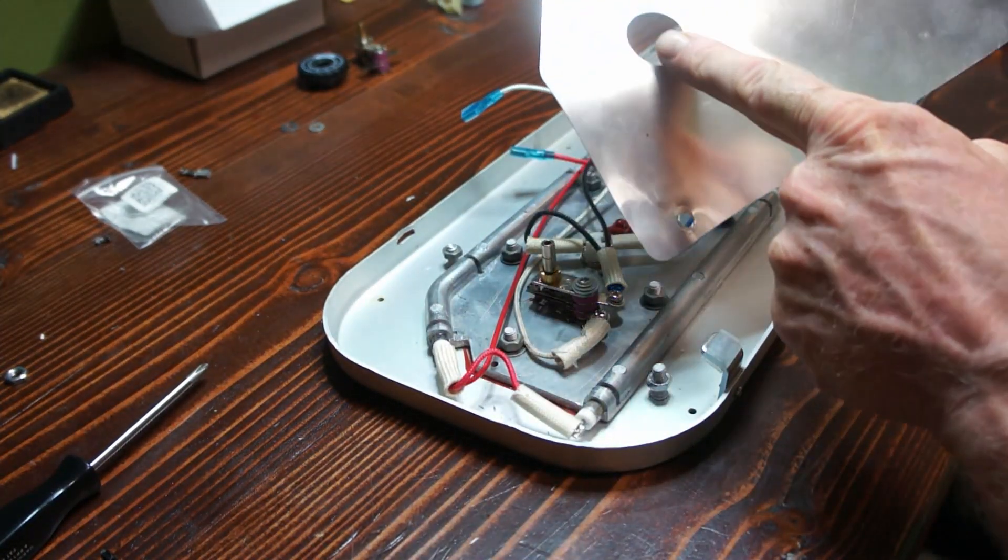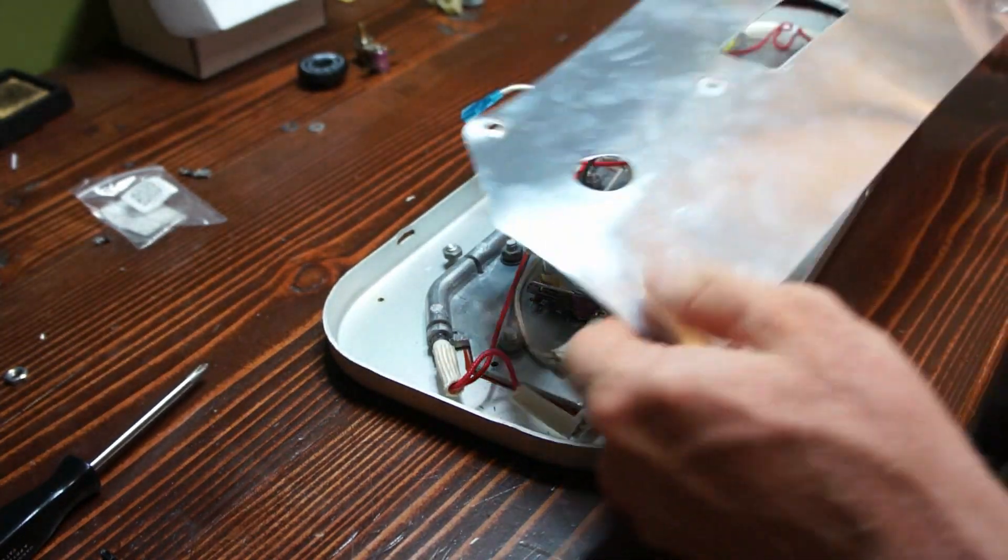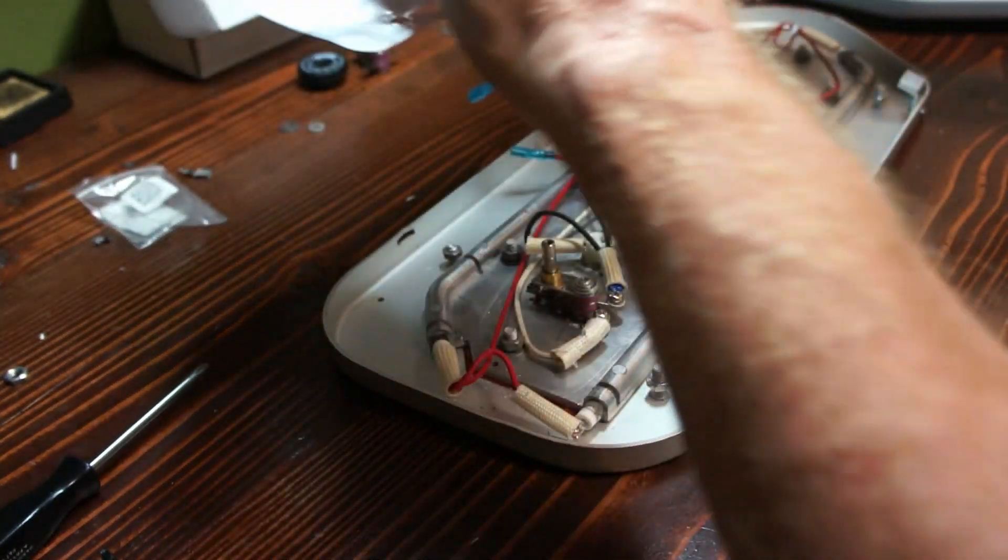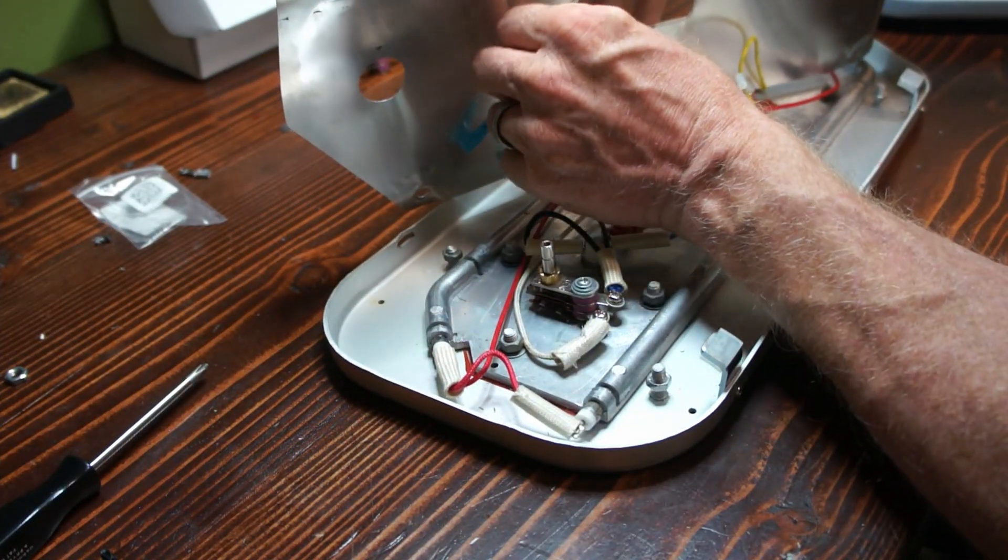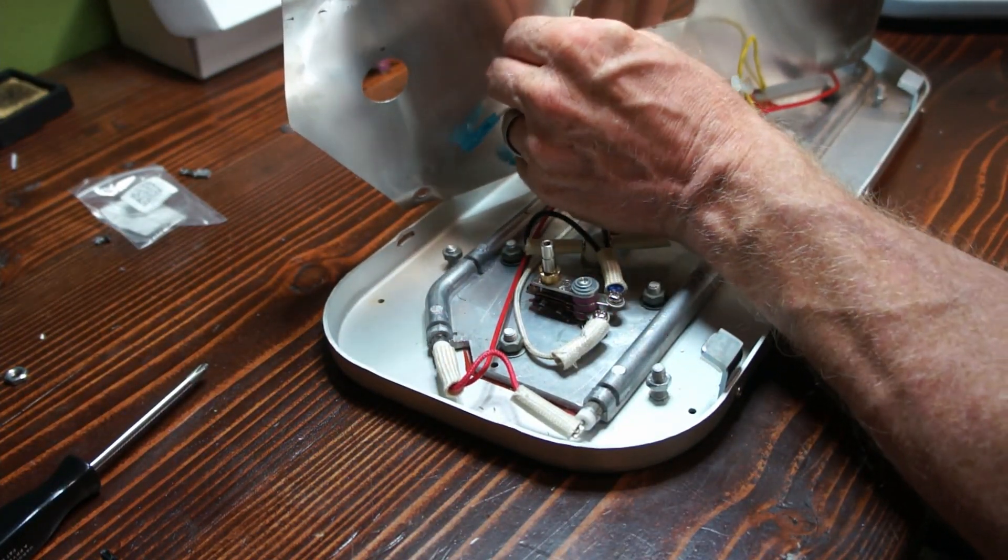All right, let's put the heat shield back on, make sure this hole is in the right spot so it goes over the thermostat. You can get the water hoses back in through the grommets just by pushing gently through there.